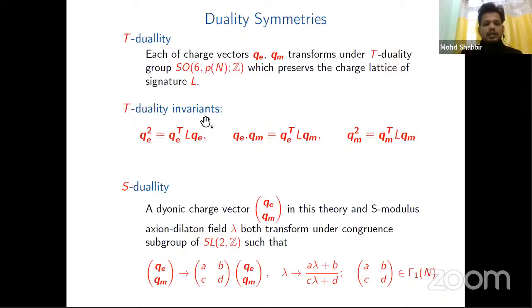Let's talk about the duality symmetries. Each charge vector with q_e and q_m transforms under a U-duality group, this group which preserves the charge lattice, which is an even self-dual lattice of signature (6N + 6, 6N + 6). The three duality invariants are here. For S-duality, the dynamical charge vector q_e, q_m and the axion-dilaton field λ both transform under a congruence subgroup of SL(2,Z) such that (a,b,c,d) belongs to a Γ_1(N)-type congruence subgroup.